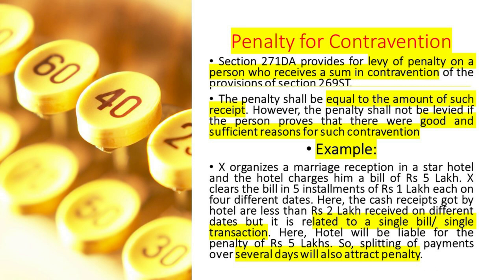Example: X organizes a marriage reception in a star hotel and the hotel charges him a bill of rupees 5 lakhs. X clears the bill in 5 installments of rupees 1 lakh each on different dates. Here, the cash received by the hotel is less than rupees 2 lakhs on different dates, but it is related to a single bill or single transaction. Here, the hotel will be liable for a penalty of rupees 5 lakhs.